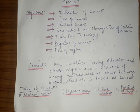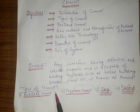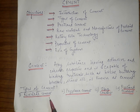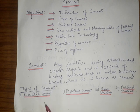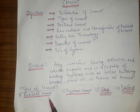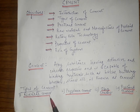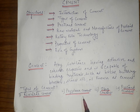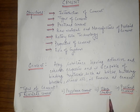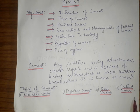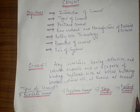Based on its various components, cement can be classified broadly into four types: natural cement, pozzolana cement, slag cement, and Portland cement.